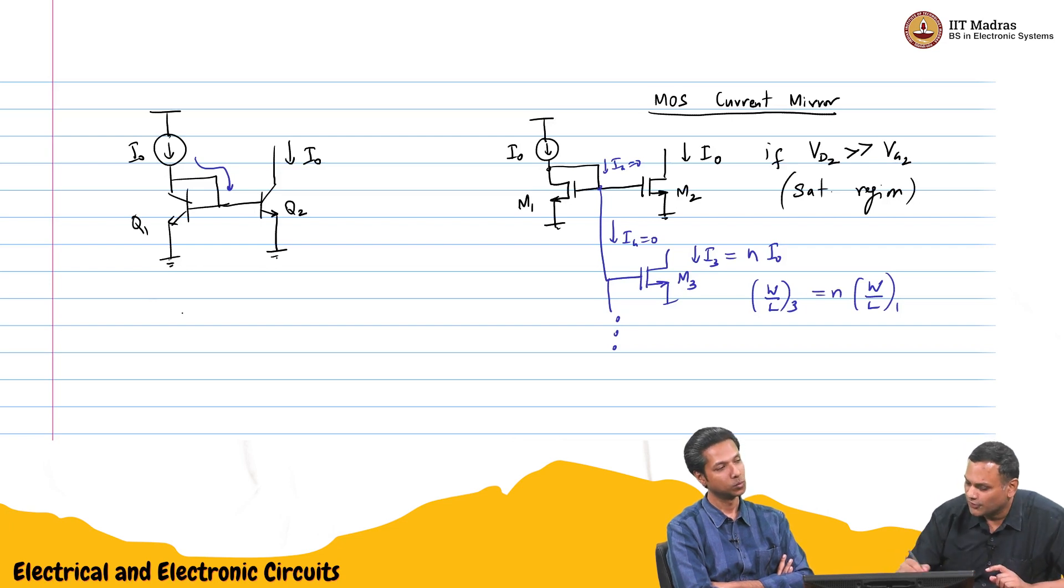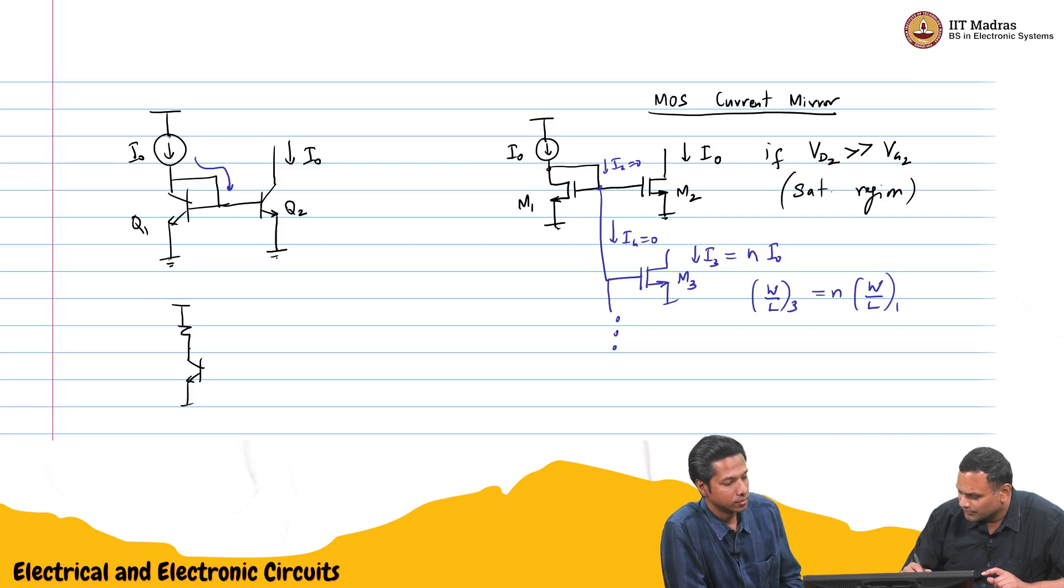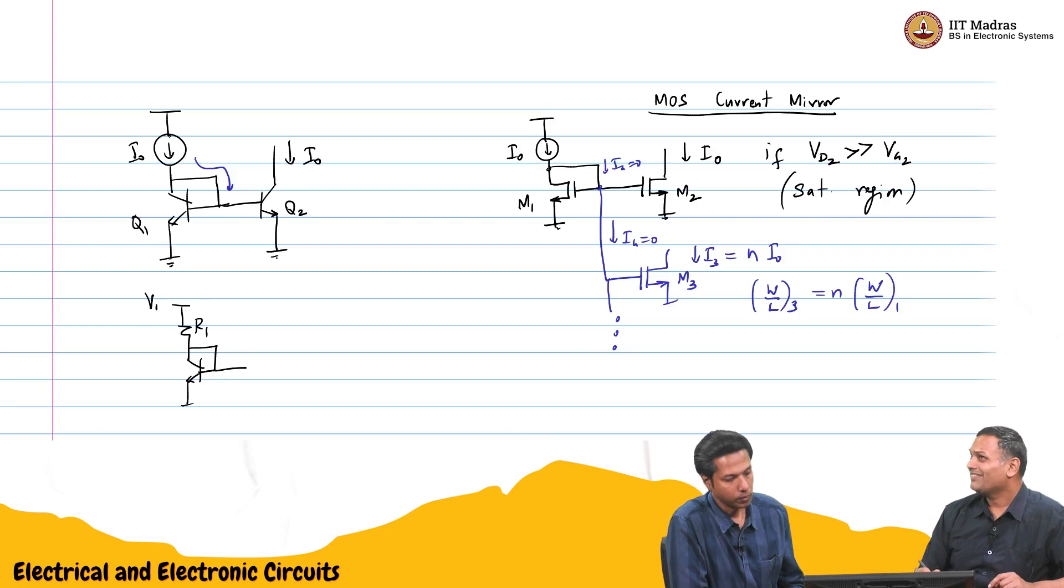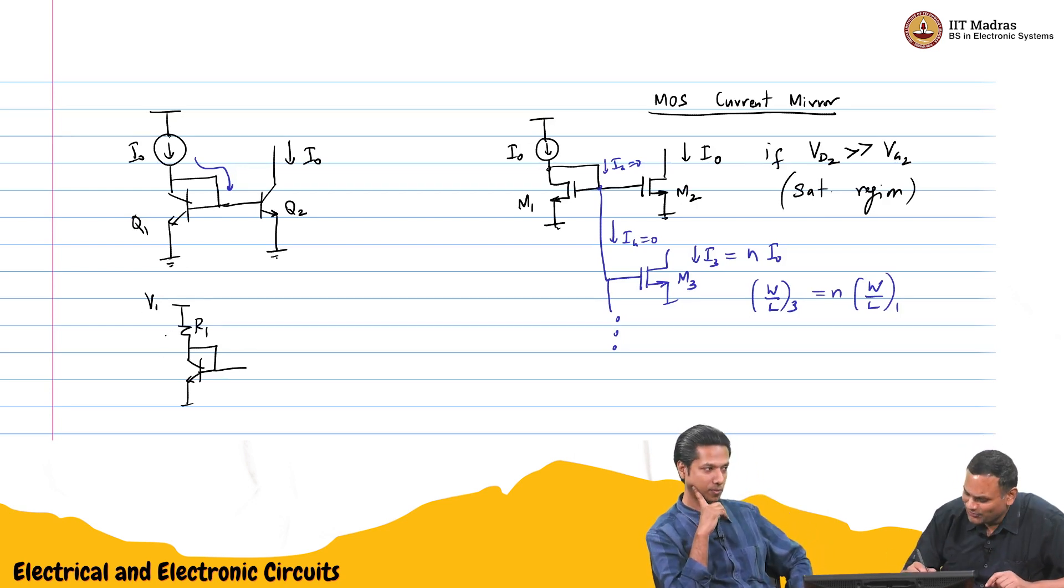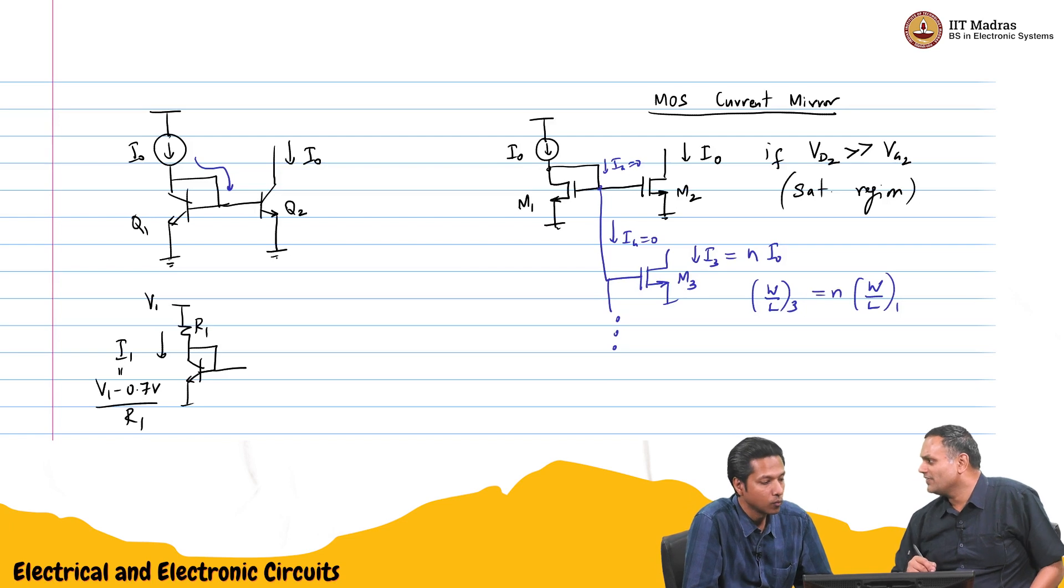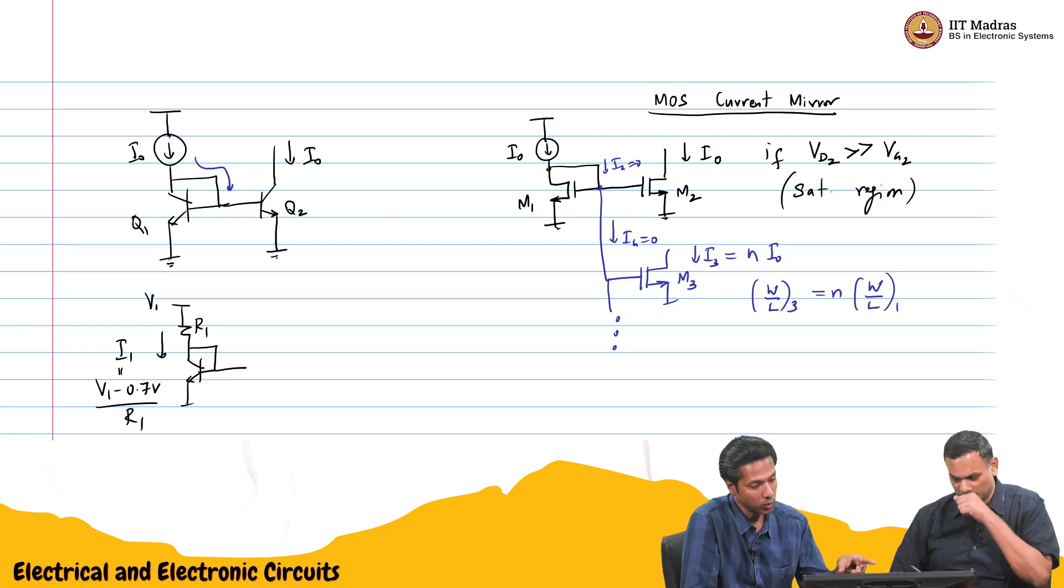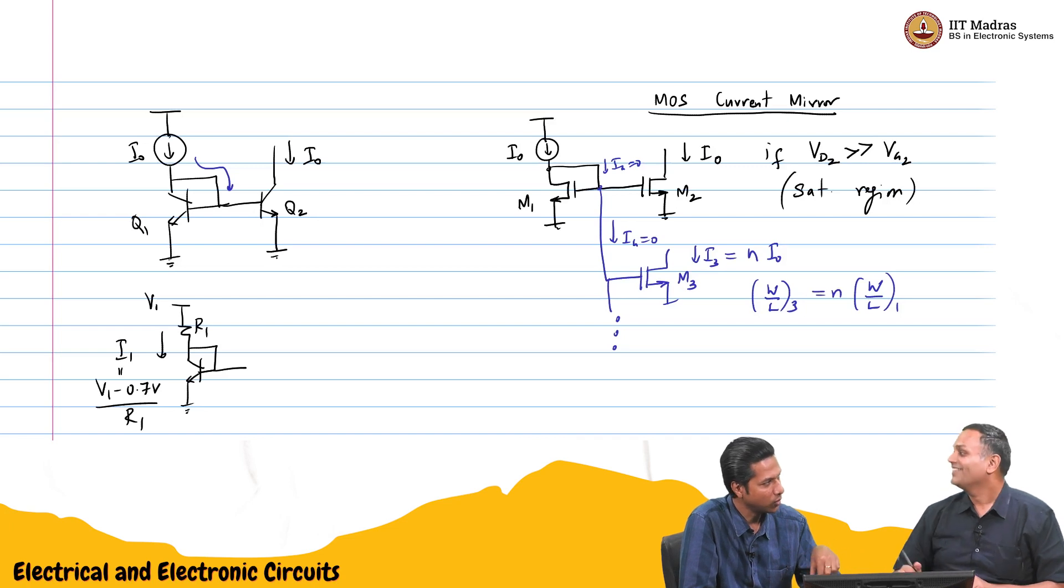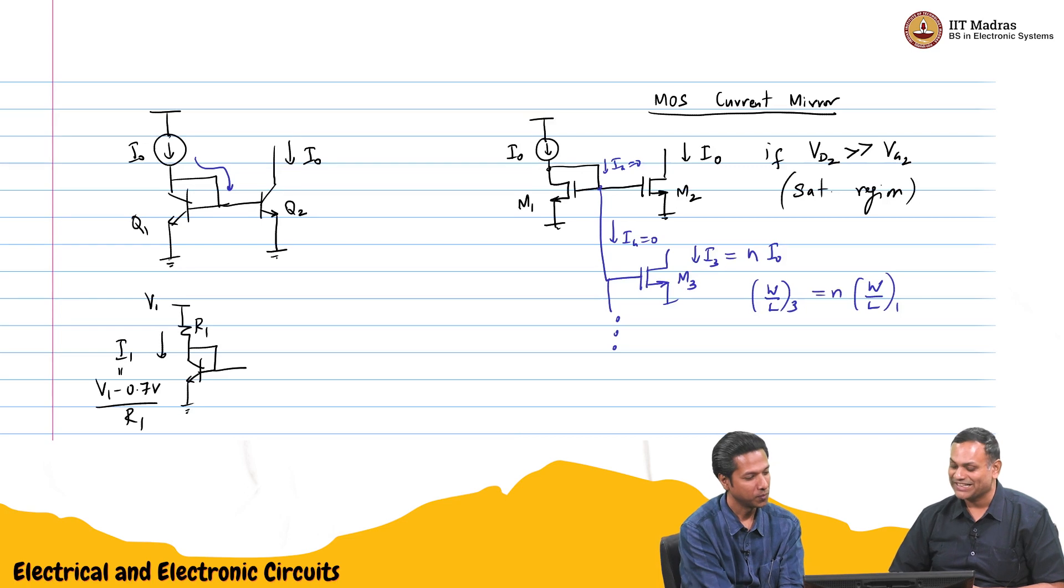And in the BJT, we also saw - I think we did like this - because the base-emitter voltage is 0.7, if you apply some VDC here, some V1 here, with R1, I think we solved a problem. Then this current I1 is nothing but V1 minus 0.7 volts by R1. That one does not happen so easily here because then you will have to solve the quadratic, because you do not know what VGS1 is. I think in the problem we solved, we did not assume 0.7, we solved for it. Maybe you are right.